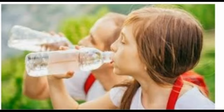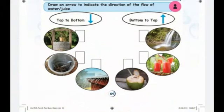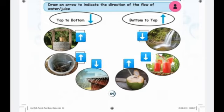Dear kids, let's do one activity. Draw an arrow to indicate the direction of the flow of water or juice. Top to bottom, bottom to top. Options are well, bore well, roof, coconut, juice and stream. Answer is: well, bottom to top. Bore well, bottom to top. Roof, top to bottom. Coconut, bottom to top. Juice, top to bottom. Stream, top to bottom.